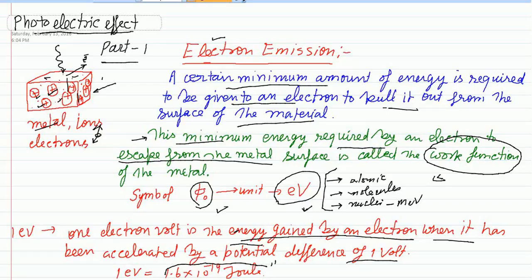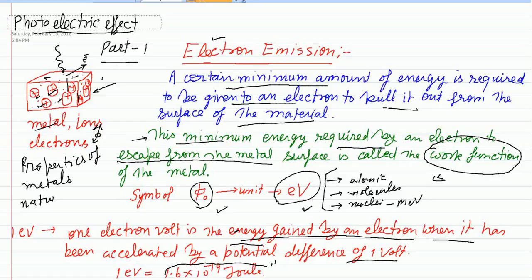The work function is used to describe the energy needed to escape the electron from the metallic surface, and it depends on the properties of the metal and the nature of the surface. These are the two points on which the value of the work function depends. Different materials have different work functions.